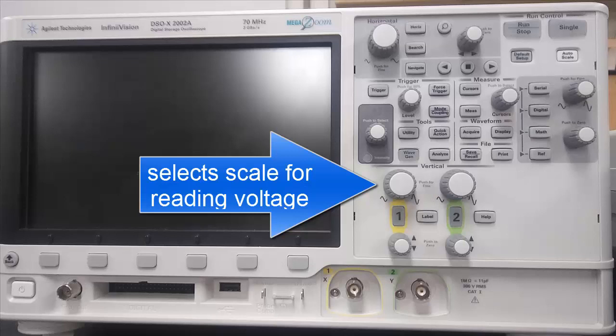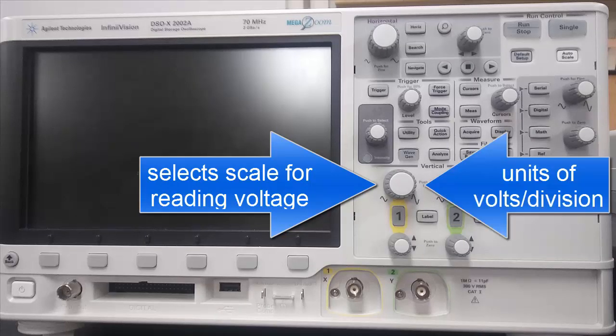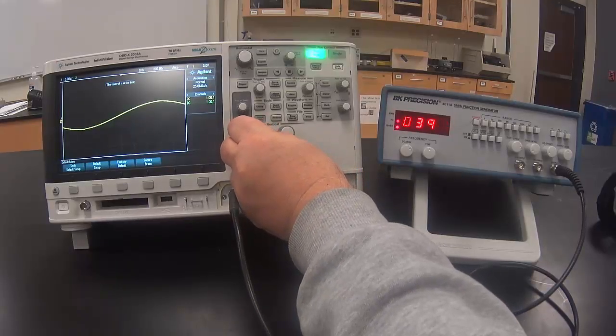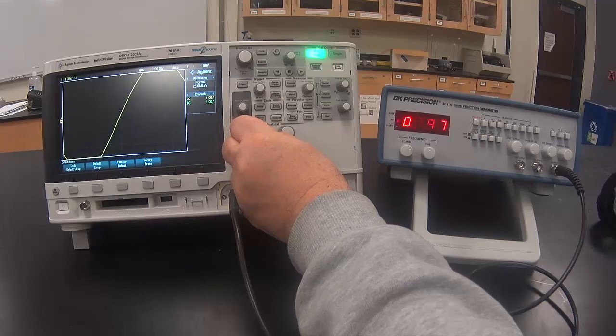This knob selects the scale for reading voltage. It is set in units of volts per division. Adjusting this knob to a lower setting causes the signal to be displayed bigger on the screen.